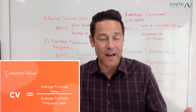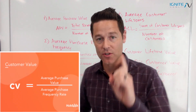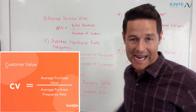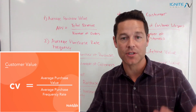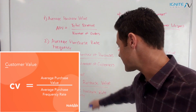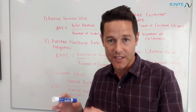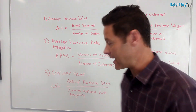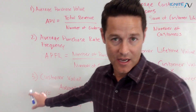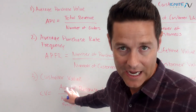Item number three is customer value — how valuable is that customer? The way you determine that is by looking at the average purchase value, so how much an individual purchases, and then the average purchase rate frequency, so how often people are purchasing. By combining these two things together, you get the number that tells you the customer value.